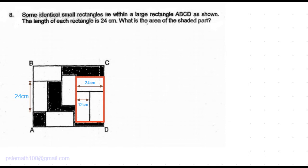Now we can find the area of the smaller rectangle. Our idea is to find the length and width of the larger rectangle so that we can find its area, and then subtract the smaller rectangles from it to get the remaining shaded area.